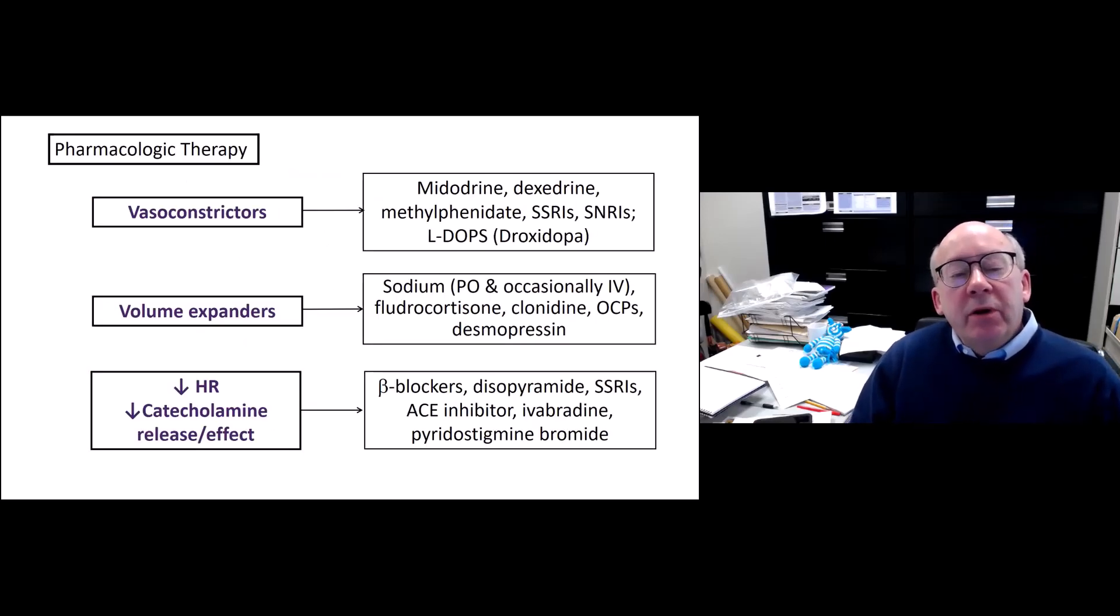When we move to pharmacologic therapy, we are trying to deal with this using vasoconstrictor drugs, things that expand the blood volume, and then drugs that affect heart rate or the release of catecholamines. Among the more helpful ones in the vasoconstrictor category are midodrine and the stimulant medications. For volume expansion, we use a lot of extra sodium in the diet and occasionally intravenously. Fludrocortisone can help with blood volume expansion as can clonidine and desmopressin. And then to reduce heart rate, we often begin with beta blockers. Ivabradine is a newer drug that can control heart rate, especially if the resting heart rate is above 100. And we've had a lot of success with pyridostigmine bromide in patients as well.